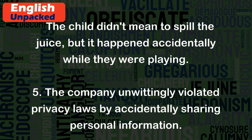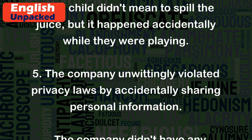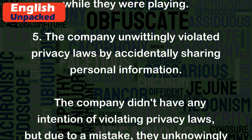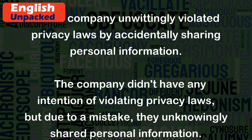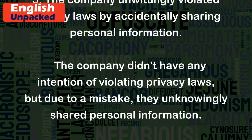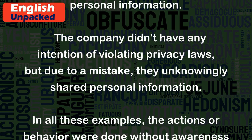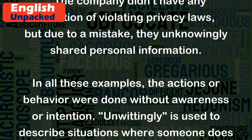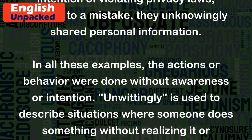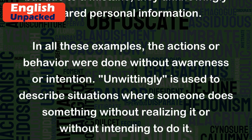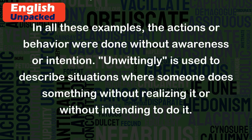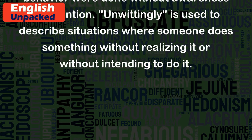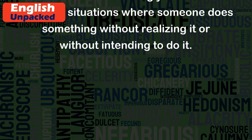5. The company unwittingly violated privacy laws by accidentally sharing personal information. The company didn't have any intention of violating privacy laws, but due to a mistake, they unknowingly shared personal information. In all these examples, the actions or behavior were done without awareness or intention. 'Unwittingly' is used to describe situations where someone does something without realizing it or without intending to do it.